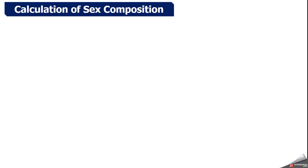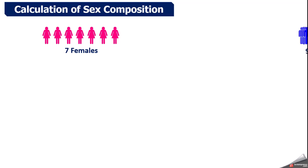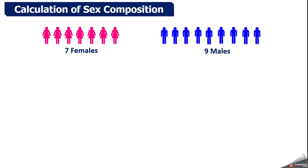Now, how to calculate sex composition or sex ratio — it's very simple math. For example, if there are 7 females and 9 males on the screen, the ratio of females to males is written as 7:9 or 7/9 or 7 upon 9. This is how ratios are written — you must have studied this in class 8, 9, or 10 mathematics.